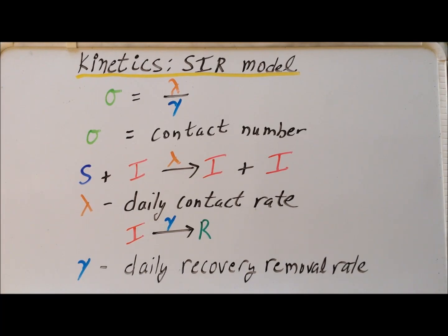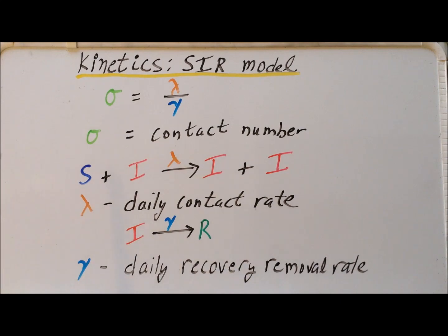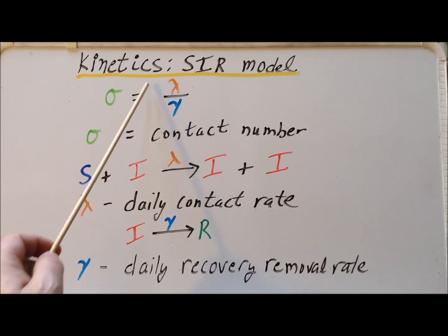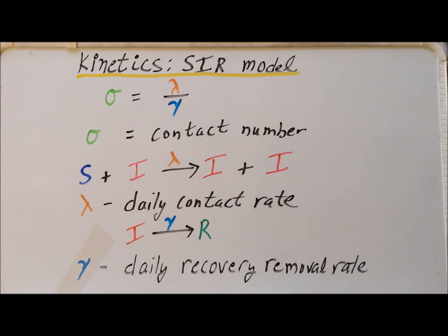In the model, we also define a quantity sigma, which for the mechanism that we have so far would be defined as the ratio of lambda over gamma, and this sigma is called the contact number. Within the model, the contact number has great significance because depending upon its value, the epidemic will either drop down to zero or it will level out at some particular equilibrium value.